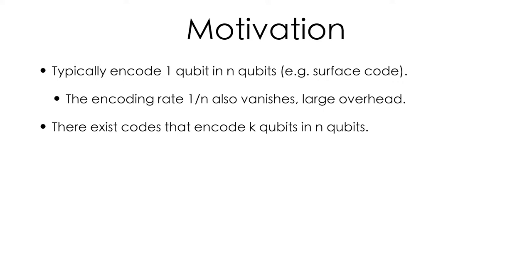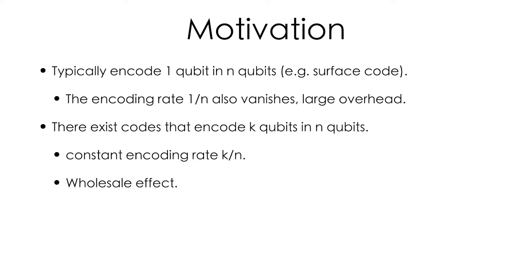The class of codes I'm going to be talking about today are capable of encoding k qubits into n qubits, where this parameter k scales with the block size. So the cost of encoding any given logical qubit decreases as you increase the block size. There's a sort of wholesale effect that you get as you buy more physical qubits, and the price of any given logical qubit becomes cheaper.